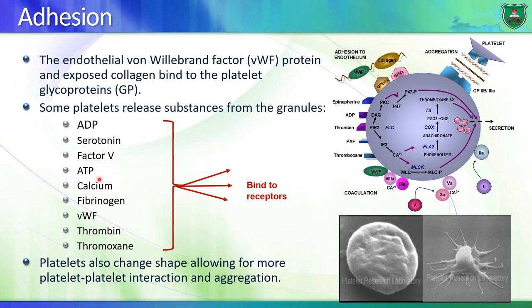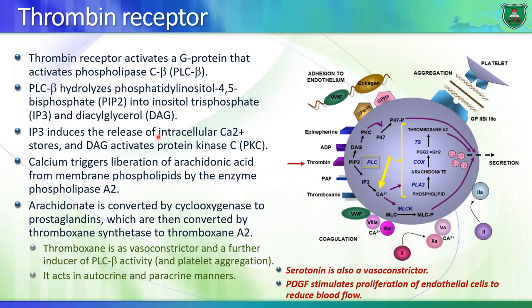Once the platelets are activated, their shape changes. This change in cell shape results in more platelet-platelet adhesion and aggregation. As you will see later on, thrombin is a major player in blood coagulation. It binds to a receptor - a G-protein coupled receptor called the thrombin receptor.